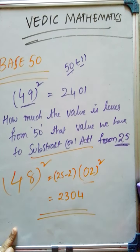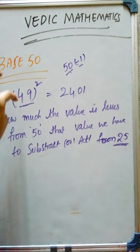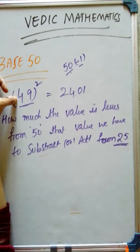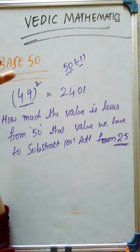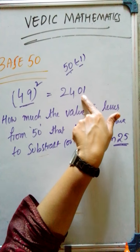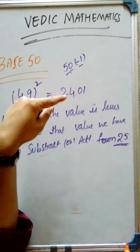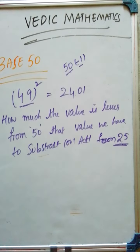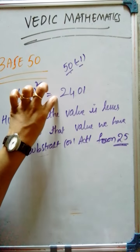Go and check in your calculator whether it is correct or not. What I am taking here — first of all, the given value is this one. We have to observe how much it is lesser from 50. That value we have to square and place in this position. We have to write that square here, and we have to subtract that much value from 25. The answer is this one.